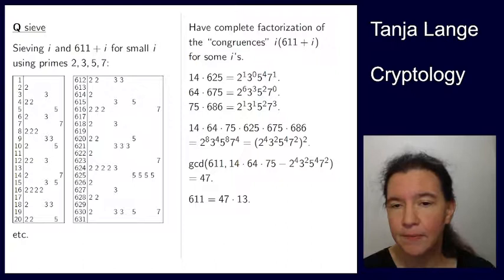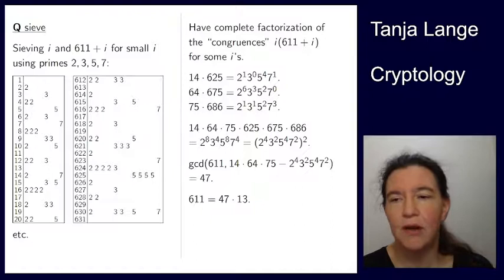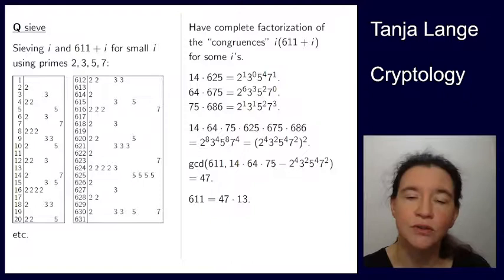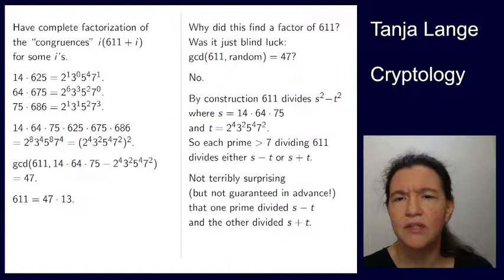So at this point I have computed GCD with 611, now I want to factor 611, I have computed GCD, I have gotten 47, so obviously I'm done. Also 13 is prime, so I'm really, really done. But was this just luck? How did this find the factor of 611?